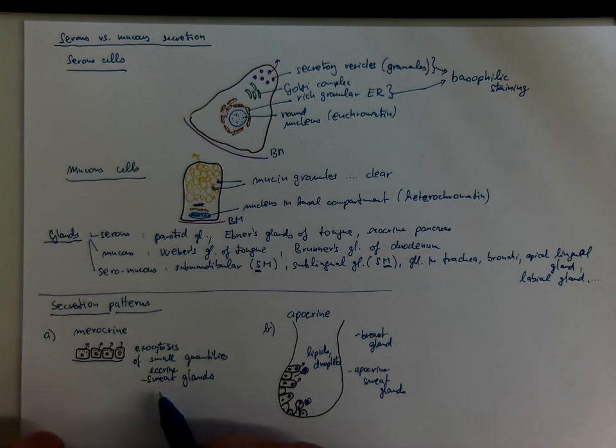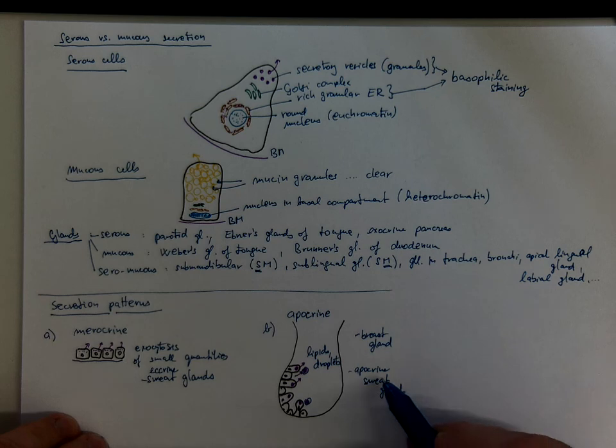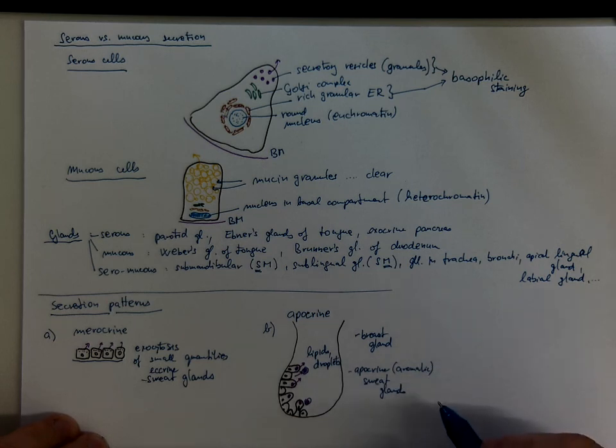Eccrine sweat glands are almost everywhere in your skin. Apocrine sweat glands or aromatic sweat glands are only in specific locations such as the axilla, the armpit, the groins. They surround the external genital organs and the anus.